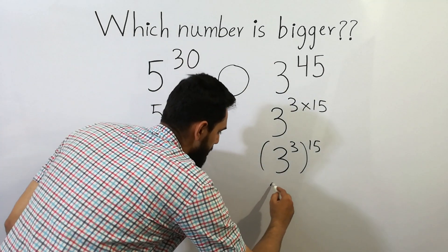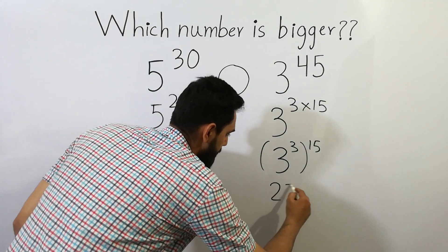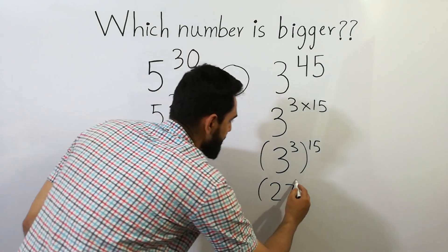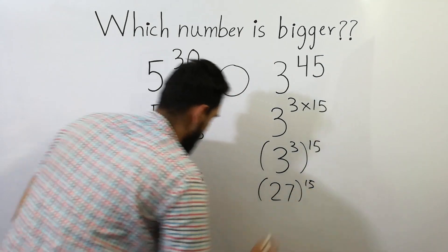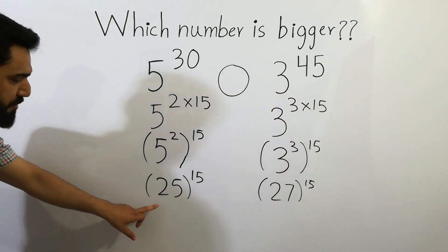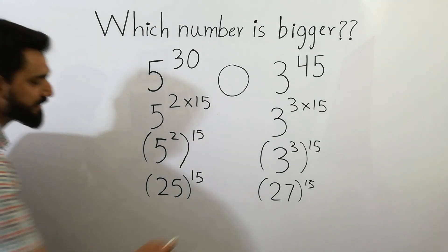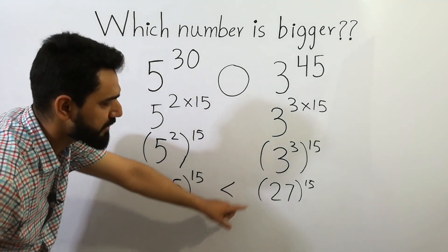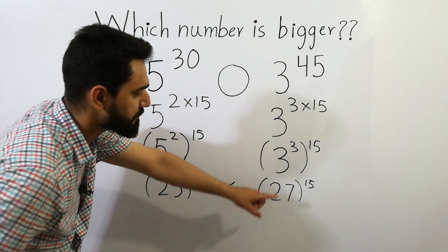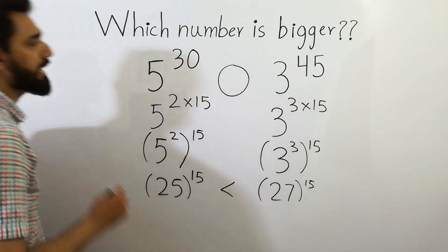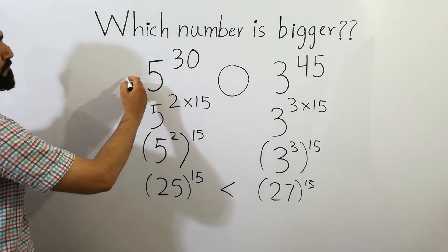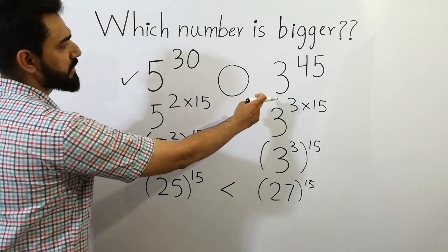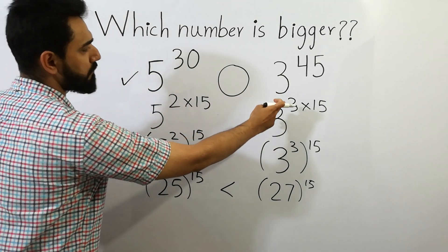Since 5 squared is equal to 25, we have 25 to the power 15, and 3 cubed is equal to 27, so 27 to the power 15. Since 25 to the power 15 is less than 27 to the power 15, hence 5 to the power 30 is less than 3 to the power 45.